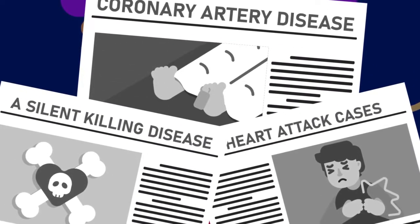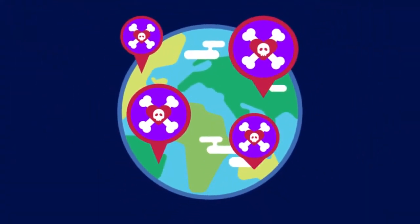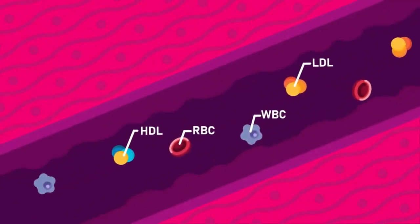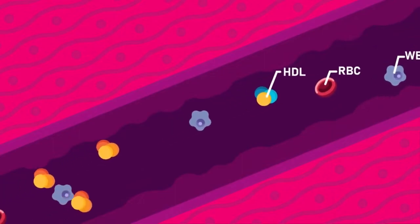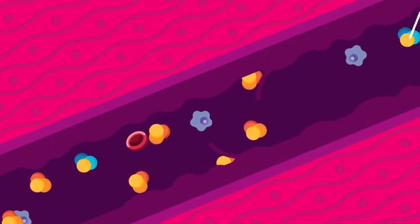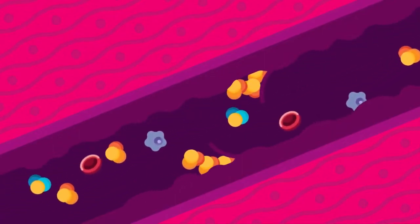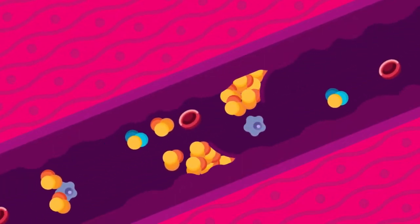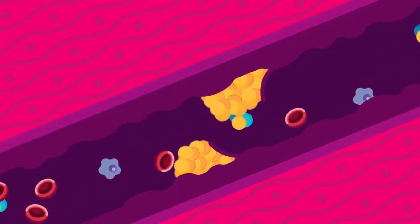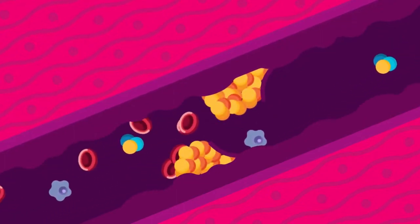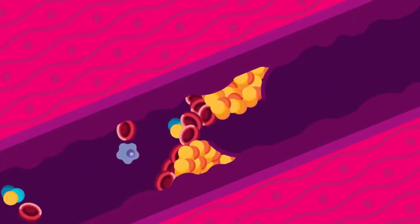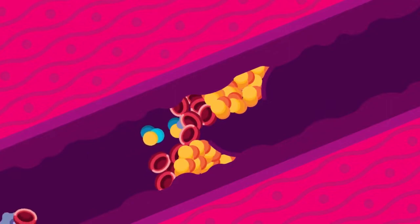It is the leading cause of major illnesses and deaths worldwide. Coronary heart disease normally happens when fatty deposits called cholesterol accumulate on the artery walls, creating plaques. The arteries become tightened, making it difficult for blood to flow to the heart.